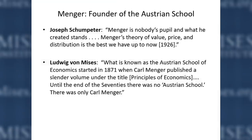A few great historians of economic thought, including Joseph Schumpeter, remarked on how original Menger was. He wrote: 'Menger is nobody's pupil, and what he created stands. Menger's theory of value, price, and distribution is the best we have up to now' — written in 1926 in an obituary for Menger. Ludwig von Mises wrote: 'What is known as the Austrian School of Economics started in 1871 when Karl Menger published his Principles of Economics. Until the end of the 1870s, there was no Austrian school — there was only Karl Menger.'